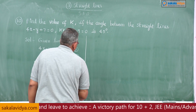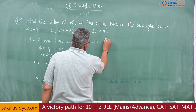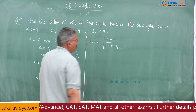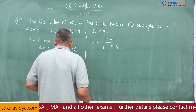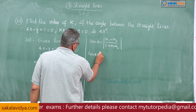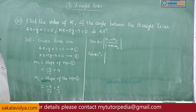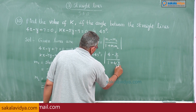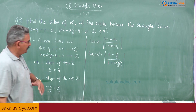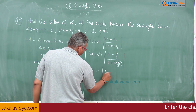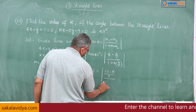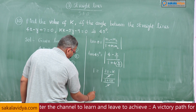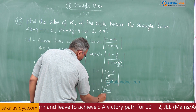Recollecting the formula: since theta is acute, tan theta equals (m1 minus m2) over (1 plus m1·m2), with the condition that m1·m2 does not equal minus 1. Substituting: tan 45 degrees equals modulus of (4 minus k/5) over (1 plus 4 times k/5). Taking LCM 5, this simplifies to 1 equals modulus of (20 minus k) over (5 plus 4k).